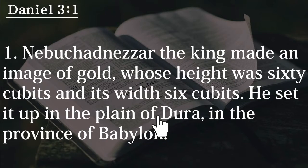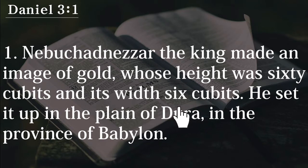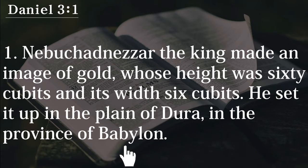Let's see another scripture. In the book of Daniel chapter 3 verse 1: the king made an image of gold whose height was sixty cubits and its width six cubits. He set it up in the plain of the province of Babylon. Through this scripture, king Nebuchadnezzar made an image of gold — the size was sixty cubits in height and six cubits in width — and he made people bow to this gold.